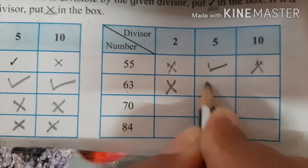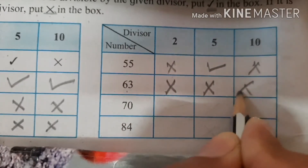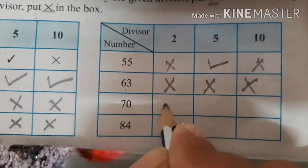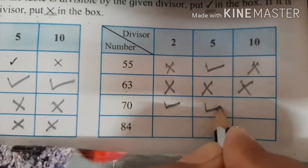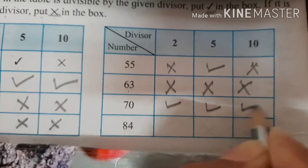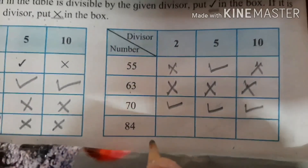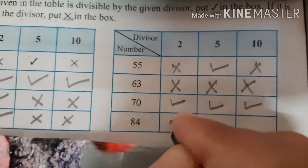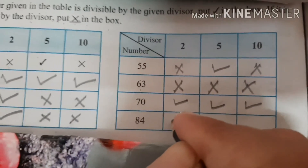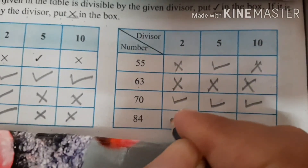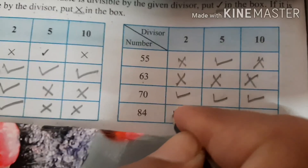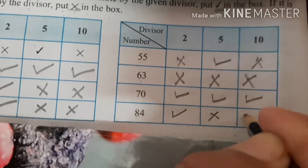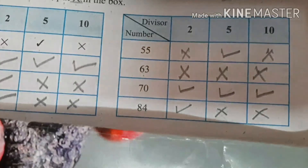55 — divisible by 2? No. By 5? Yes. By 10? No. Number 70 — divisible by 2? Yes. By 5? Yes. By 10? Yes — it is fully divisible. And the last number, 84 — divisible by 2? Yes. By 5? No. By 10? No.